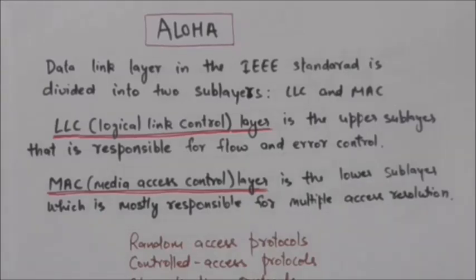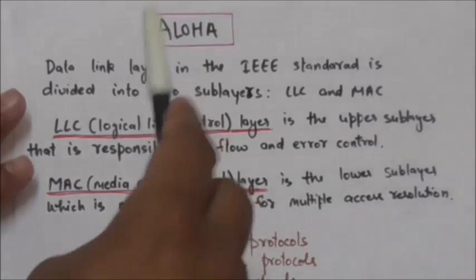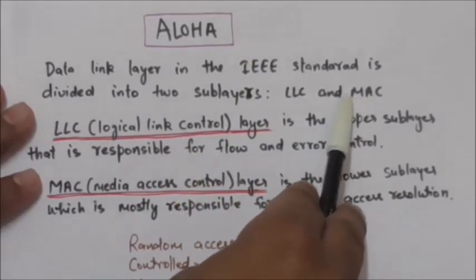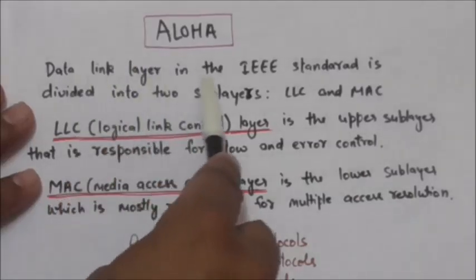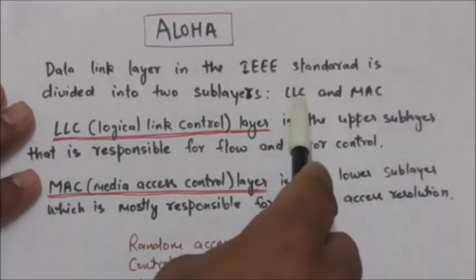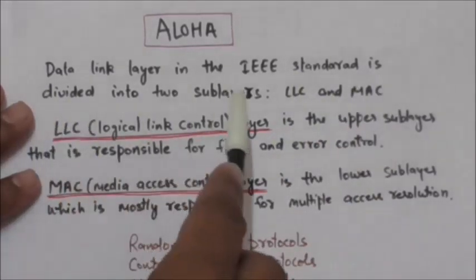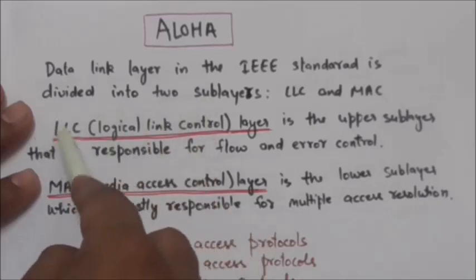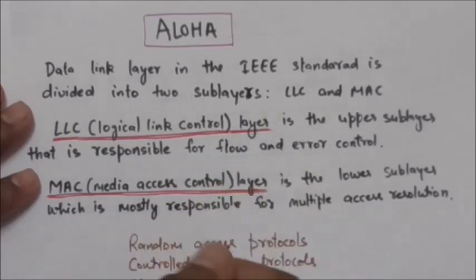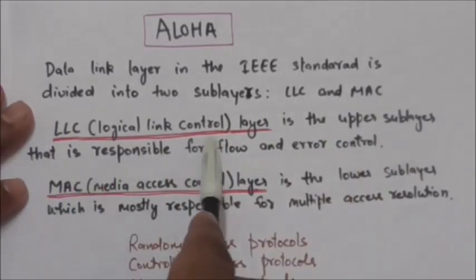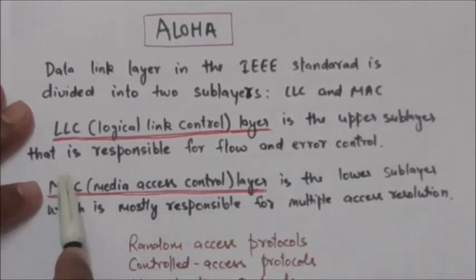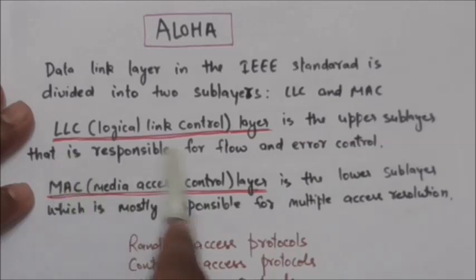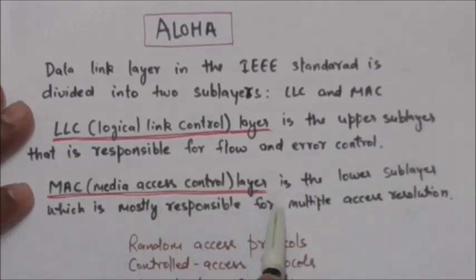Welcome back. In this tutorial we are going to study about Aloha protocol. The data link layer in the IEEE standard is divided into two sub-layers: LLC and MAC. The full form of LLC is Logical Link Control. The LLC layer is the upper sub-layer responsible for flow and error control. The full form of MAC is Media Access Control. The MAC layer is the lower sub-layer which is mostly responsible for multiple access resolution.